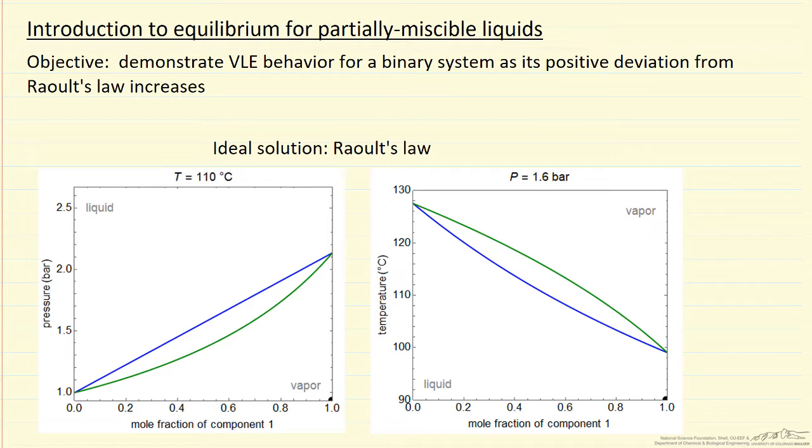Here I'm going to use PXY and TXY diagrams to demonstrate the type of behavior as we get deviations from Raoult's Law that are more and more positive.